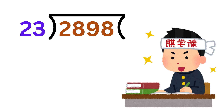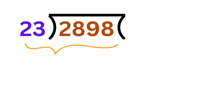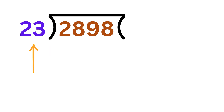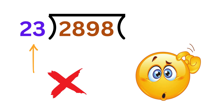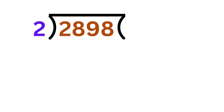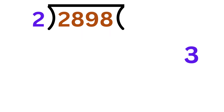Okay, let us start. Now in this first example, we need to find this value divided by 23. But you know what? We do not need to divide this number by 23. We will simply divide it by 2 and write 3 here.